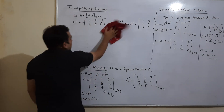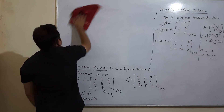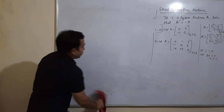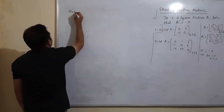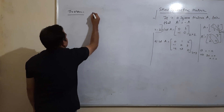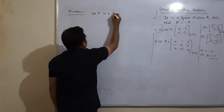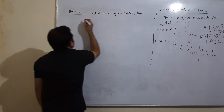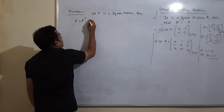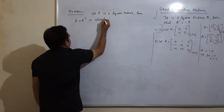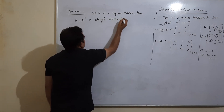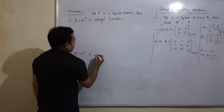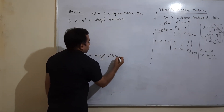With the concepts of symmetric and skew symmetric matrices, some theorems are associated. Theorem: If A is a square matrix, then (1) A + Aᵀ is always symmetric, and (2) A − Aᵀ is always skew symmetric.